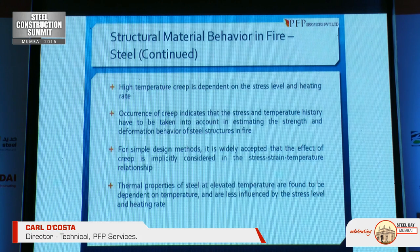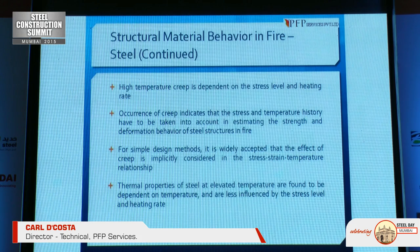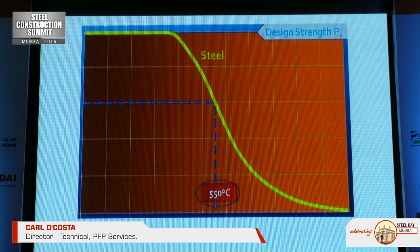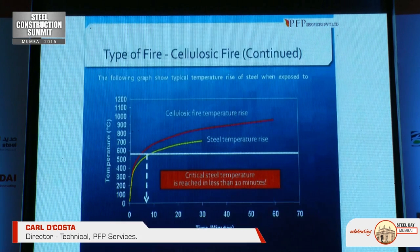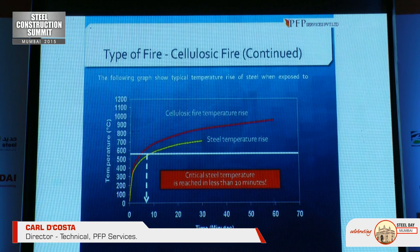For simple design methods, it is widely accepted that the effect of creep is implicitly considered in the stress-strain-temperature relationship. Thermal properties of steel at elevated temperatures are dependent on temperature and are less influenced by stress level and heating rate. A typographical example shows how steel starts losing its strength at around 550°C — which is probably around 10 minutes into a fire. As shown in the graph, the cellulosic fire curve and the steel temperature rise indicate that around the 8-minute mark, the steel has reached its failure temperature of around 550°C.